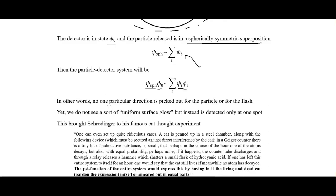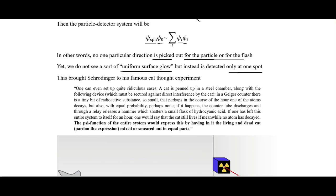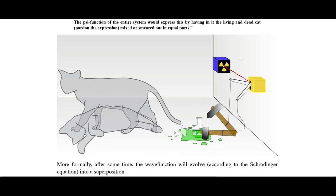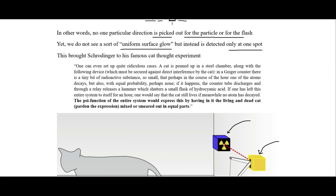In other words, no one particular direction is picked out for the particle or the flash, yet we do not see a uniform surface glow — instead it's detected at only one spot. This brought Schrödinger to his famous cat thought experiment. The setup involves a radioactive atom: if it decays, it releases a particle of radiation that triggers a hammer, releasing poison and killing the cat.